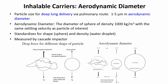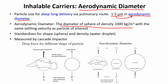Before discussing particles with those properties, let us discuss aerodynamic diameter. The particle size range for deep lung delivery via the pulmonary route is 1 to 5 microns, but this is defined as the aerodynamic diameter range. Aerodynamic diameter is the diameter of a sphere of density 1000 kg per meter cubed with the same settling velocity as the particle of interest. This is a theoretical term — it does not have a direct physical meaning but is defined as the diameter of a sphere at that standard density.